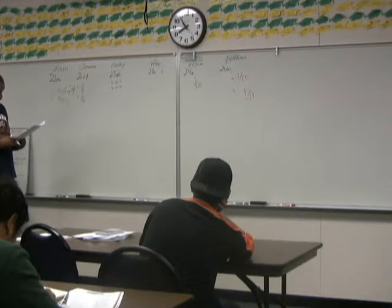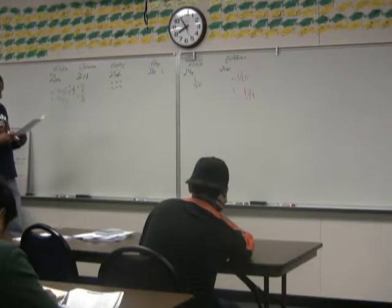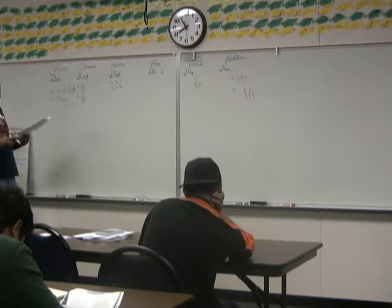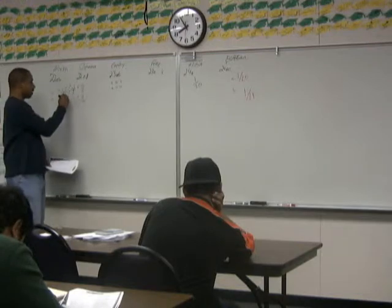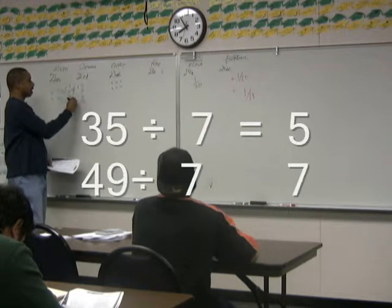Then B: what is the ratio of union workers — 35 — to the total number of workers? That's 49. Again, take a 7 out and you get 5 to 7.